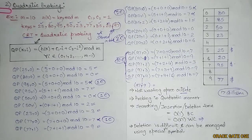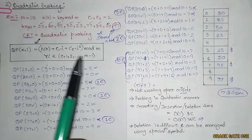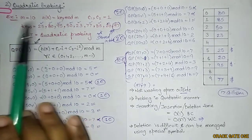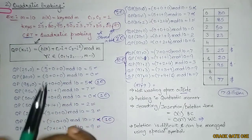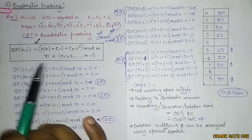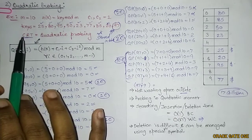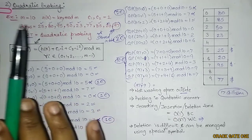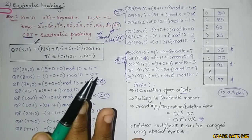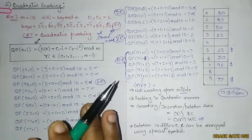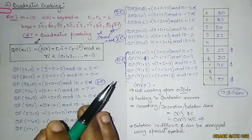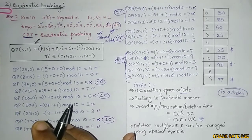In upcoming videos, I will be discussing double hashing, and after that, primary clustering and secondary clustering — which are drawbacks of linear probing and quadratic probing respectively. We will see how these problems can be resolved using double hashing, so stay tuned and do not forget to subscribe the channel.